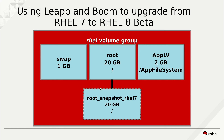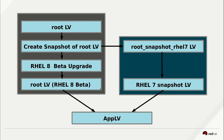This diagram here shows another way you could look at this. So we're starting with the root logical volume, which is at RHEL 7, then we're going to create a snapshot of that root logical volume, and we're going to name that snapshot root snapshot RHEL 7. Then on the original root logical volume, we're going to go ahead and do the RHEL 8 Beta upgrade using the Leap tool.